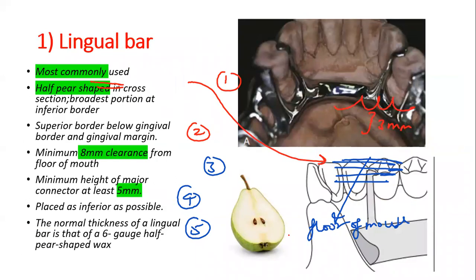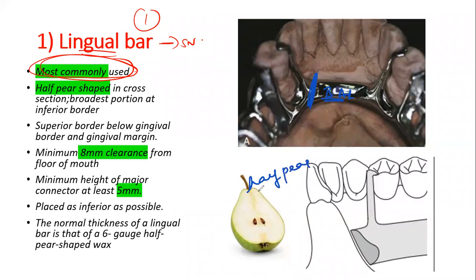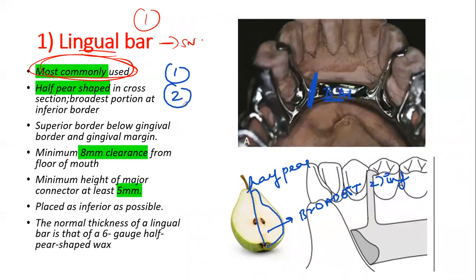Starting with the first mandibular major connector — the lingual bar. This is the most commonly used mandibular major connector and can come as a short note question. In cross-section, it appears half pear-shaped. The broadest portion is at the inferior border, near the floor of the mouth.